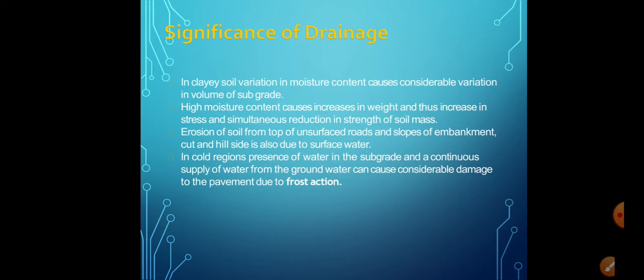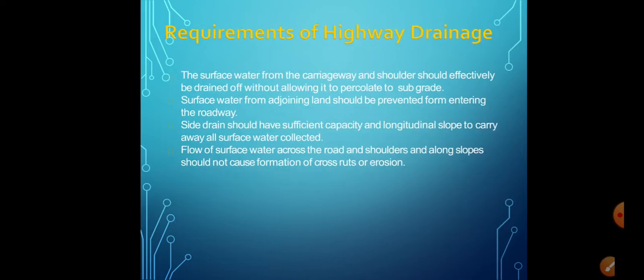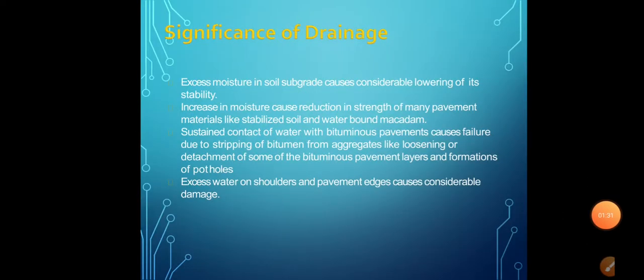Talking about the significance or importance: the surface drainage system enables draining water from the pavement surface and the shoulder during rains, diverting it to the roadside drain such that entry of water into the pavement layers and subgrade soil is minimized. During rains, one portion of rain water flows along the surface as runoff and the remaining portion percolates through the soil mass under the action of gravity until it reaches the groundwater table.